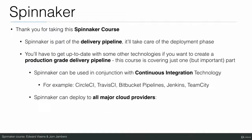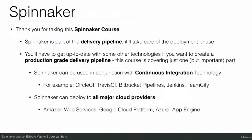Spinnaker can deploy to all major cloud providers. You can deploy to Amazon Web Services, Google Cloud Platform, Azure, App Engine, and even more. You can also deploy to Kubernetes. The ones we are going to cover in this course are Amazon Web Services, AWS, and Kubernetes.